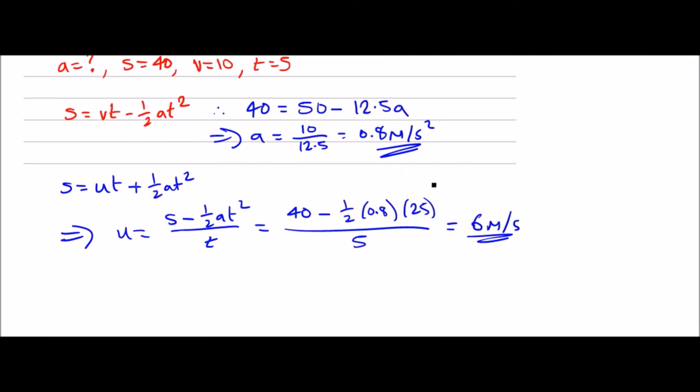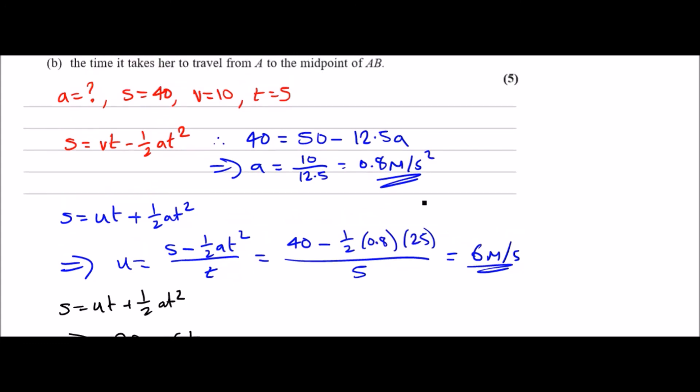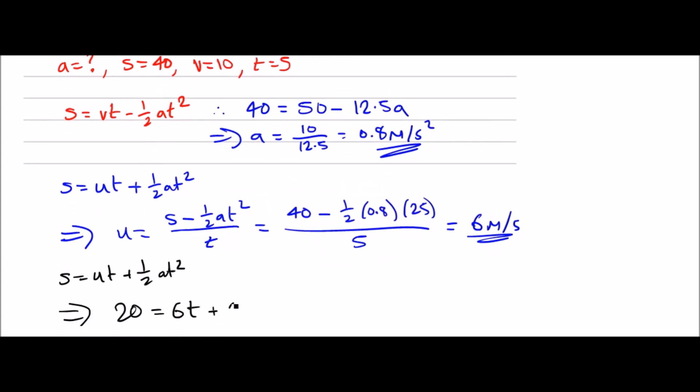Using the same equation, s equals ut plus half at squared. The aim is to find the time. Let's plug in everything we know. Remember the distance to the midpoint is 20. This equation becomes 20 equals u which is 6, so 6t plus half t squared. Half of a - a was 0.8, so half of that is 0.4t squared. This is the part where nobody likes to do, so here we need to use the quadratic formula.